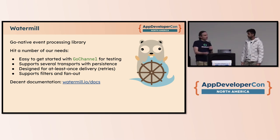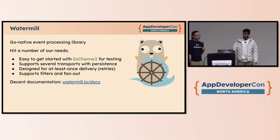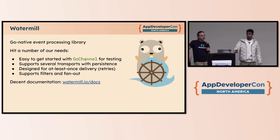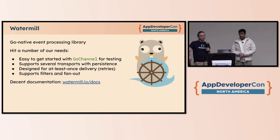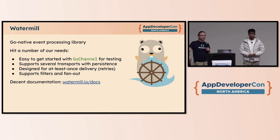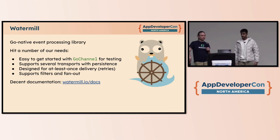We made this choice when the project was four months old, and it helped us a lot with solving some of the other problems. Watermill is really easy to get started with. It comes with Go Channel for testing, so it's all in your single application and you don't need to manage multiple components. It supports several transport layers with persistence: Go Channels, SQL, NATS, Kafka. It's designed for at-least-once delivery, supports retries, filter, fanout, and a lot of other cool stuff.